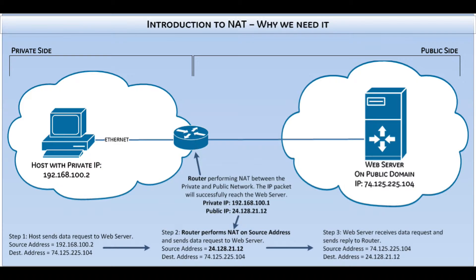When the web server sees the packet, it replies back to the router's public IP address, as shown in Step 3. This NAT functionality ultimately allows an entire private network to live off of one public IP address.